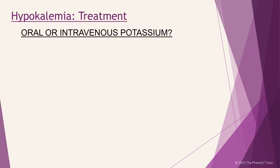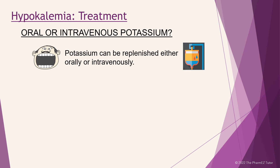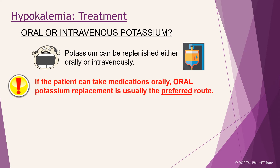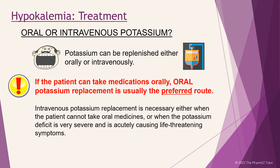When we treat hypokalemia, we need to ask ourselves if we want to supplement the potassium either orally or intravenously. Potassium can be replenished either orally or intravenously. If the patient can take medications orally, oral potassium replacement is usually the preferred route. Intravenous potassium replacement is necessary either when the patient cannot take oral medications or when the potassium deficit is very severe and is acutely causing life-threatening symptoms.